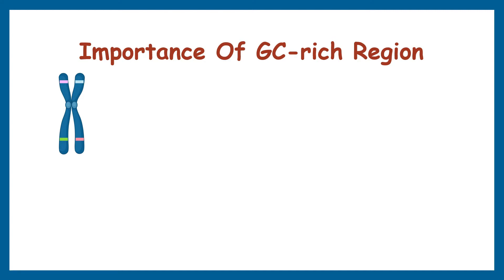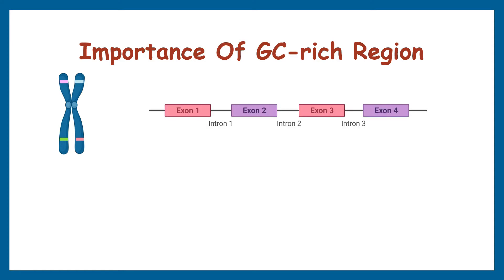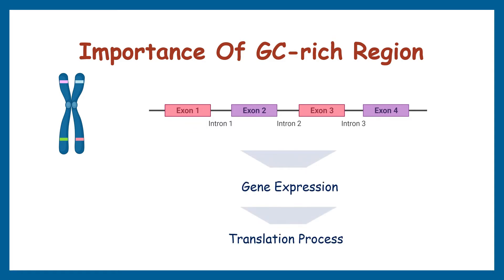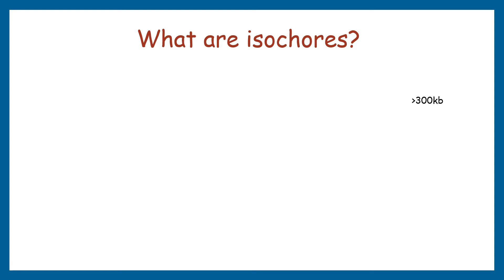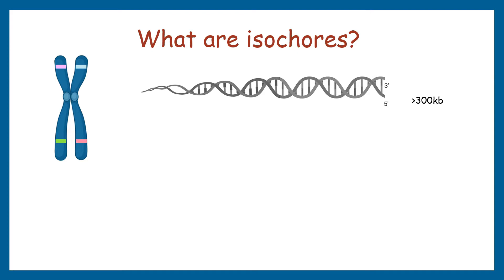The importance of GC-rich regions in our genome: the genome can broadly be classified into genes and non-coding sequences, i.e., exons and introns. However, the GC content regions span both coding and non-coding regions, and are therefore important for gene expression as well as protein formation. There is a large region in the human genome with GC-rich domains, which take part in constructing some vital genes.